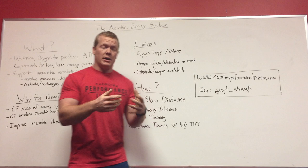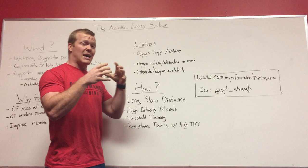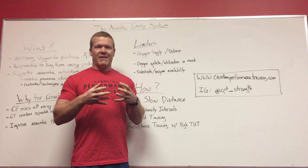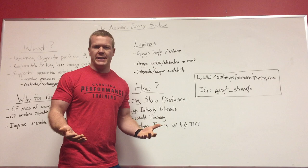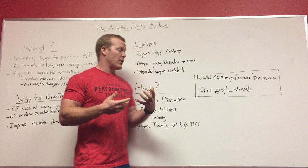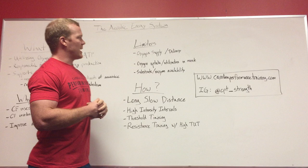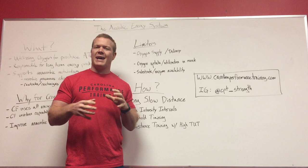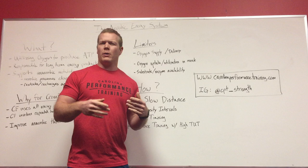The second area is the contractility of the heart — basically how strong the heart can contract with each beat — which again allows us to get more oxygenated blood to the working tissue. Additionally, for both delivery and uptake, we can improve the vascular network. We need to get blood to the working tissue, so this is where we focus on capillary density — the number of capillaries per unit of muscle — which is an area we can improve with structured aerobic training. But it doesn't do us any good if we can't utilize that oxygen at the working muscles themselves.